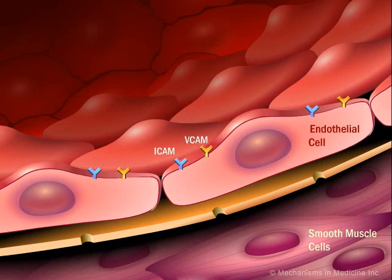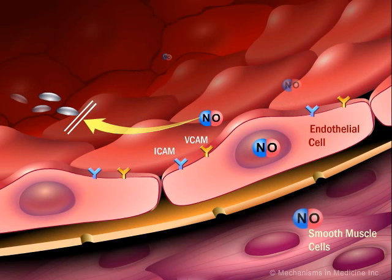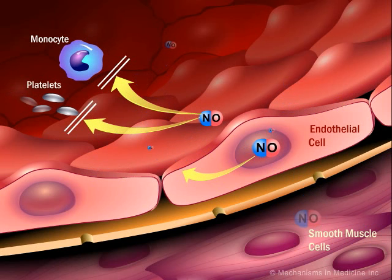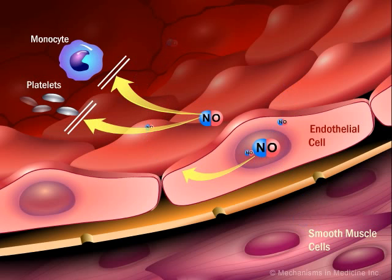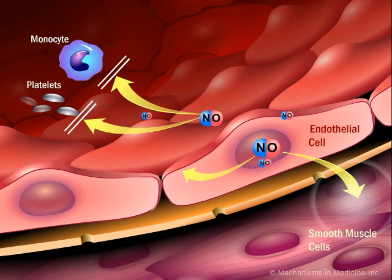Under normal circumstances, nitric oxide — a major vasodilator produced by the healthy endothelium — inhibits platelet and leukocyte adhesion to the endothelium, and works with prostacyclin to inhibit platelet aggregation. Nitric oxide also inhibits the growth of vascular smooth muscle cells.